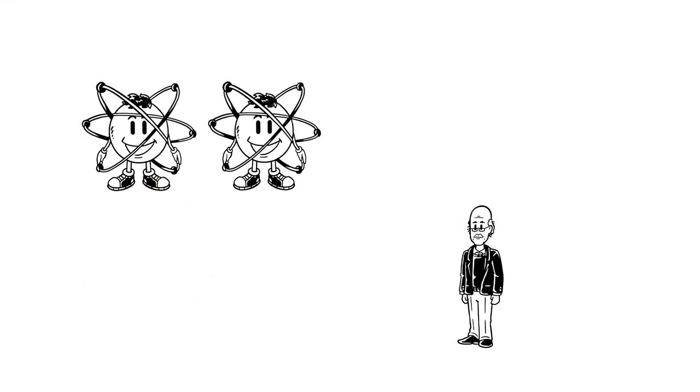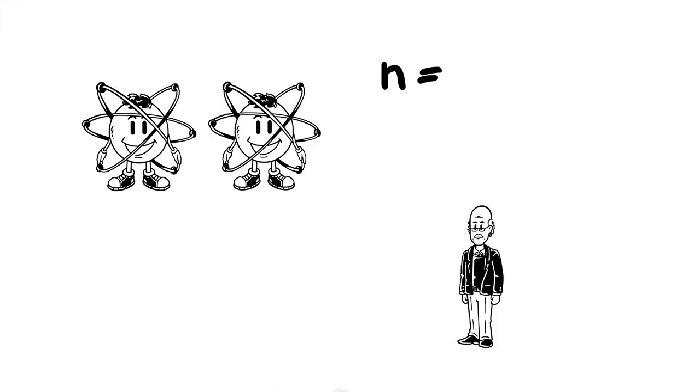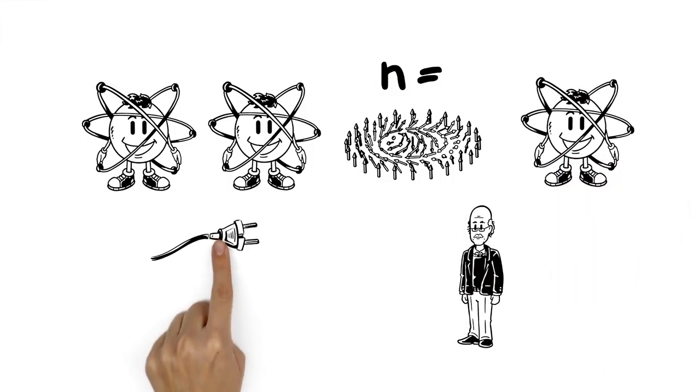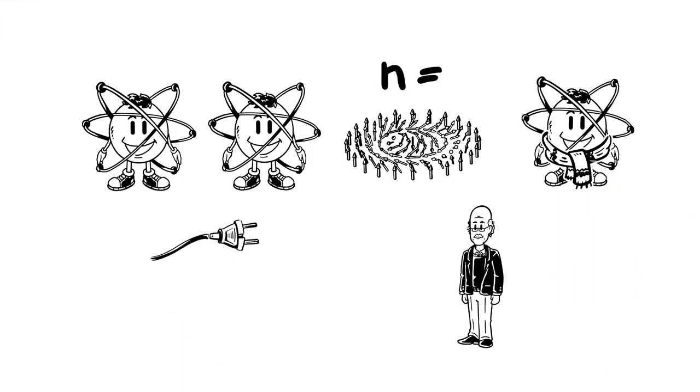Finally, Haldane studied one-dimensional chains of atomic magnets. He found another example of topological order. A different type of topological object called a skyrmion explained the change from conducting to insulating behavior of the chain.